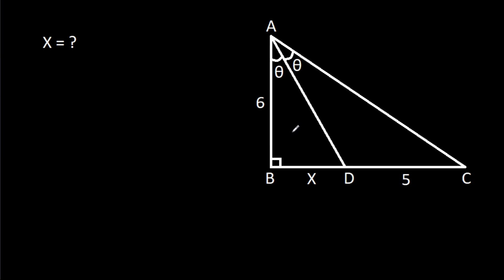In this video, we have been given that angle BAD is theta, angle CAD is theta, AB is 6, CD is 5, and BD is X. We have to find X.